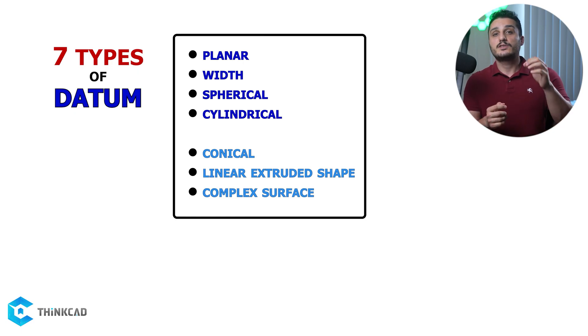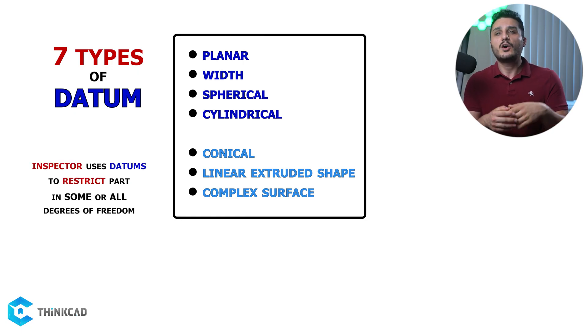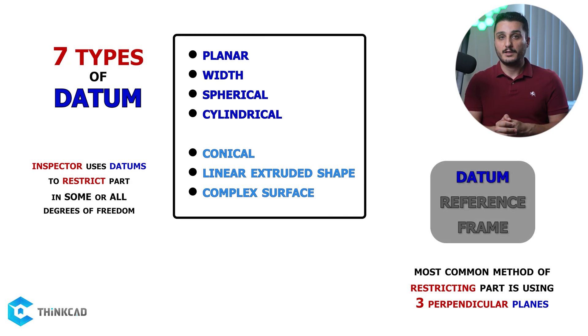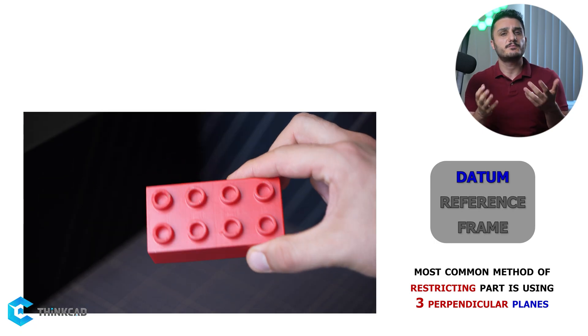You use datums to restrict your parts in some or all of its degrees of freedom when measuring your part. The most common method is using three perpendicular surfaces as your datums. These three datums establish what we call a datum reference frame. When you have a part with perpendicular faces, you can benefit from this method easily.